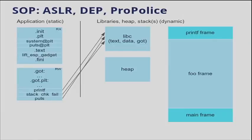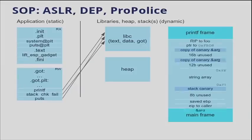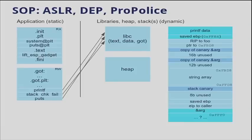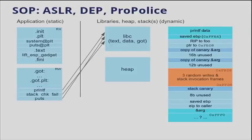At the point in time when we execute our format string bug — the printf function — the stack-check-fail function from ProPolice and the puts function all point somewhere into the libc code at some randomized location. The libc, all other libraries, the heap, and the stack are all at random locations. We want to get around that. So instead of just one memory write, for this simple example we need three random memory writes plus a set of stack invocation frames.